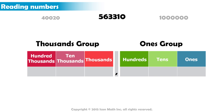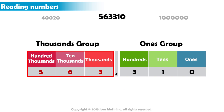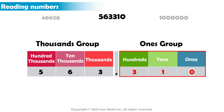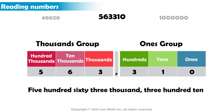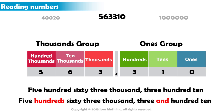Moving on to the second number. Here, we have five hundred sixty-three in the thousands group and three hundred ten in the ones group. So we start from the left and read the number as five hundred sixty-three thousand three hundred ten. Remember to use the singular form and not to say 'and' when reading whole numbers.